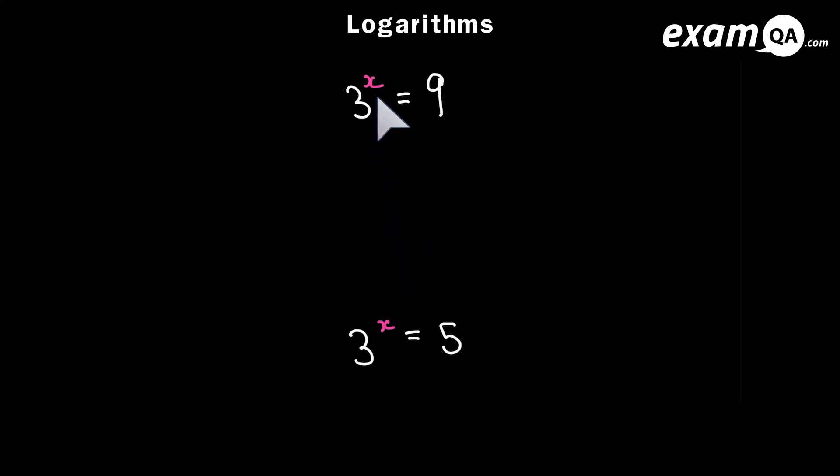So here I've got 3 to the power x equals 9. Now this one is really basic because you don't need logarithms to work this one out. You can clearly see that x must be 2. 3 to the power 2 equals 9. However I'm going to show you how to turn it into a log form and solve it as well because in the next few examples we're going to have to use that method.